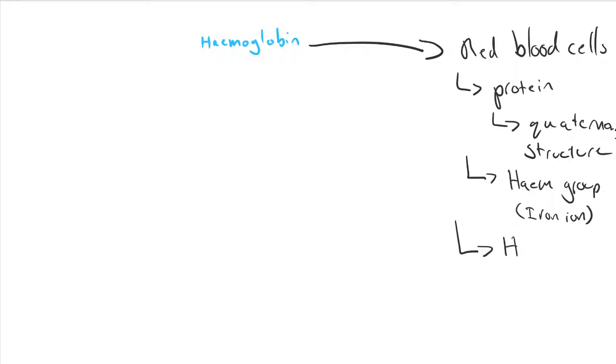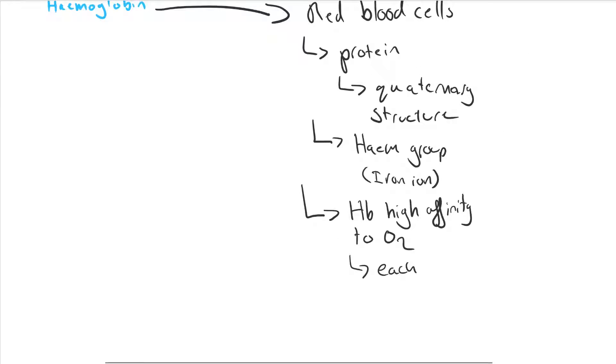Hemoglobin has a high affinity for oxygen, meaning each hemoglobin molecule loves oxygen. In this case, each hemoglobin can carry four oxygen molecules.